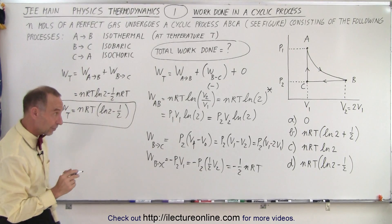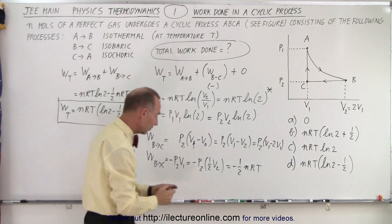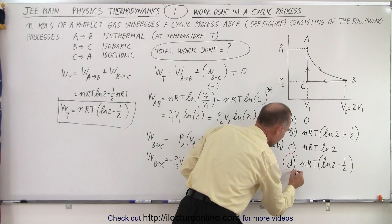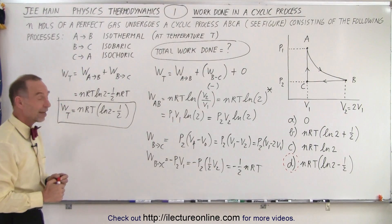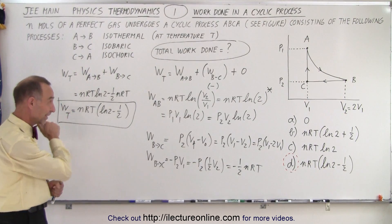When we take a look at the answers, notice it is answer number D. That's the correct answer, nRT times the natural log of 2 minus one half. And that is how it's done.